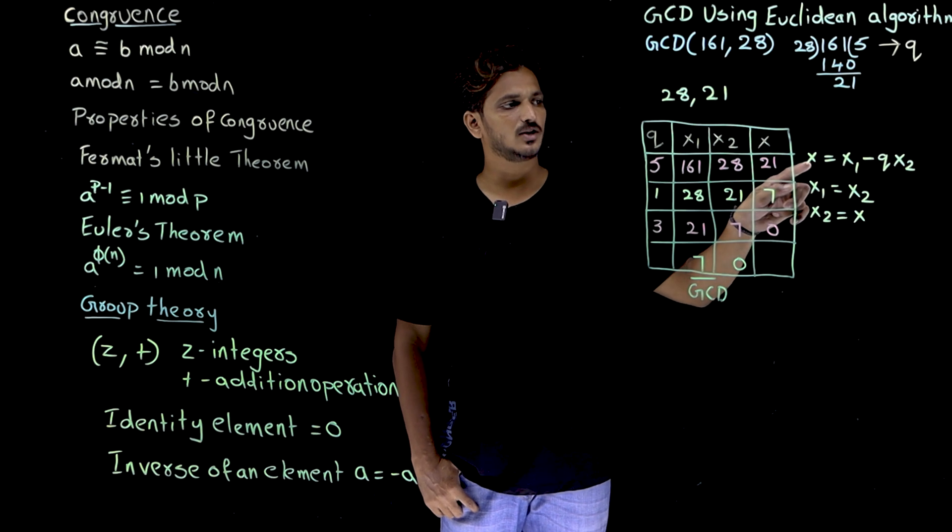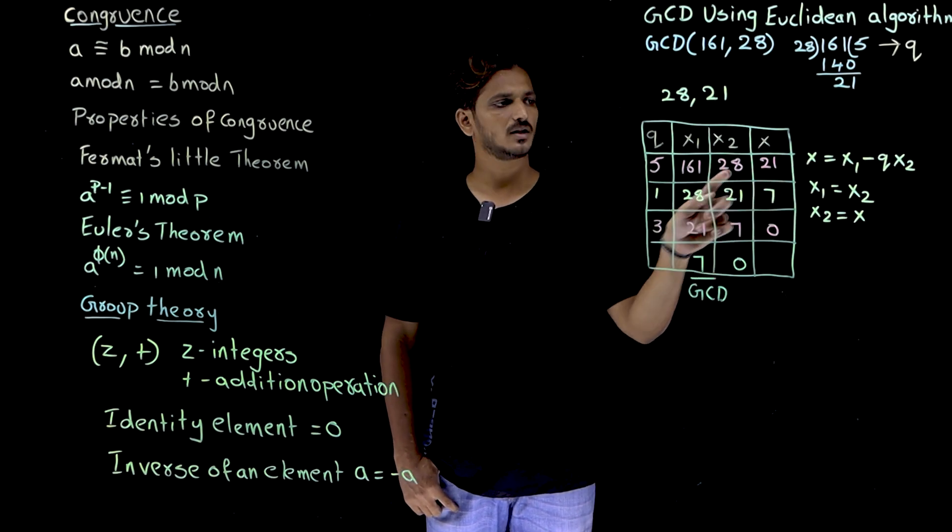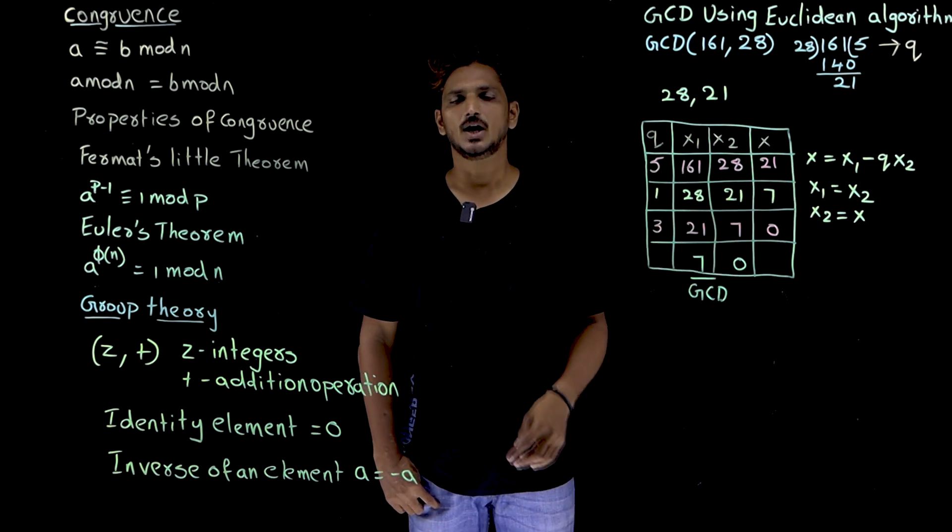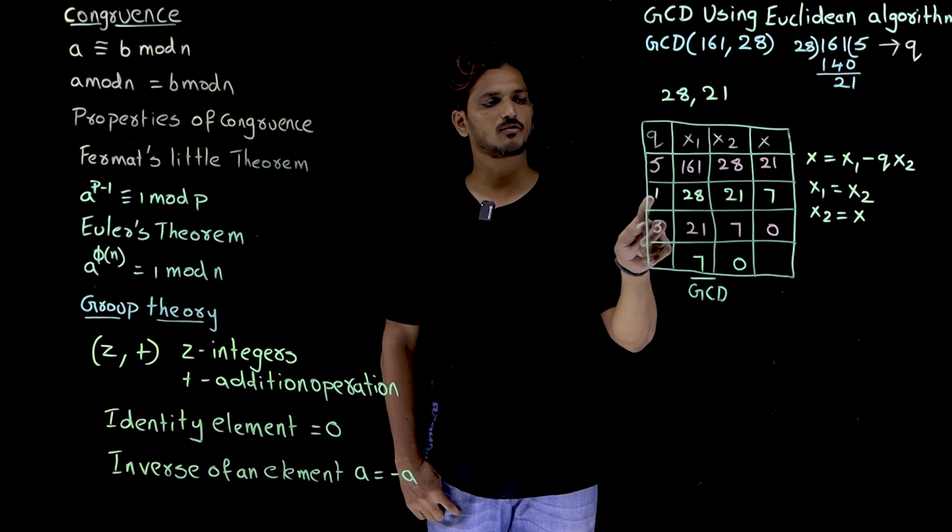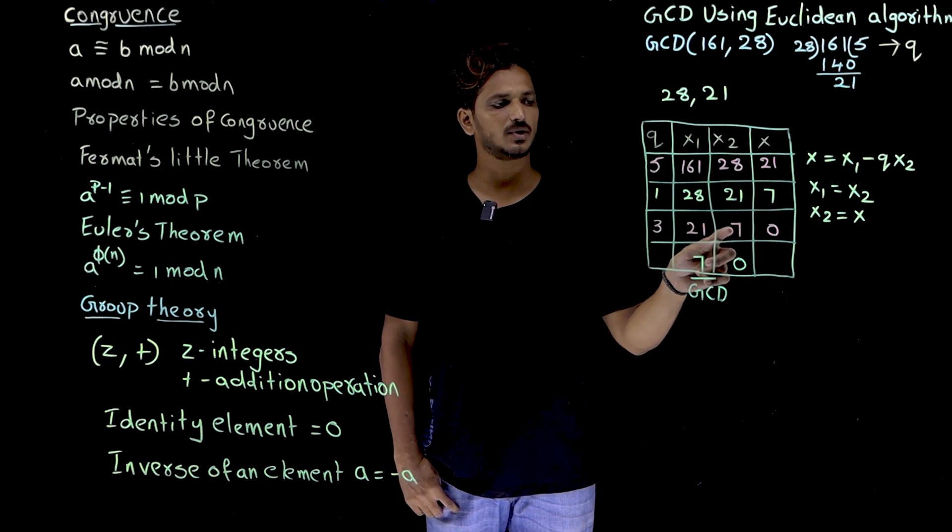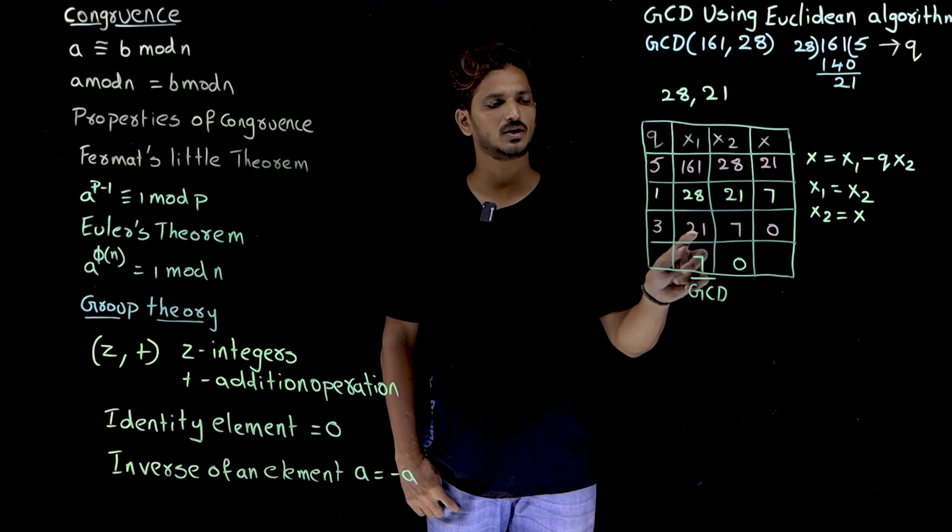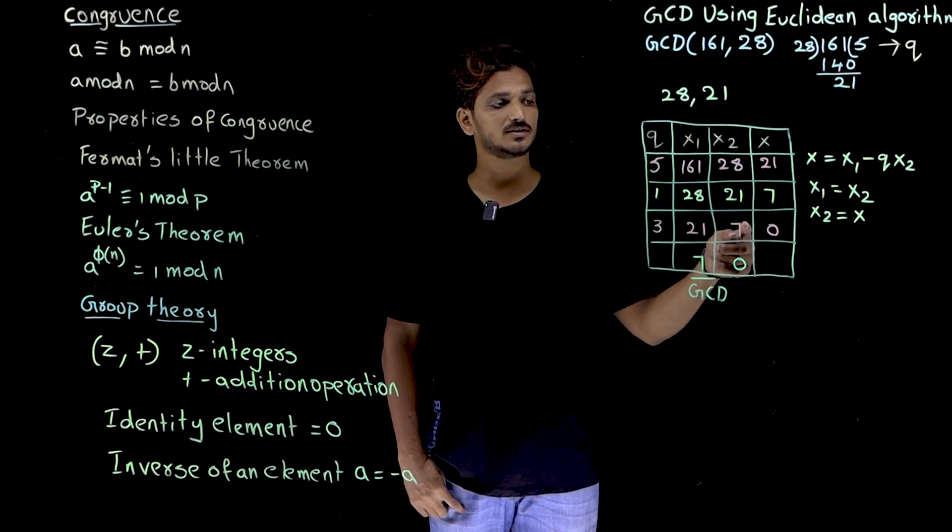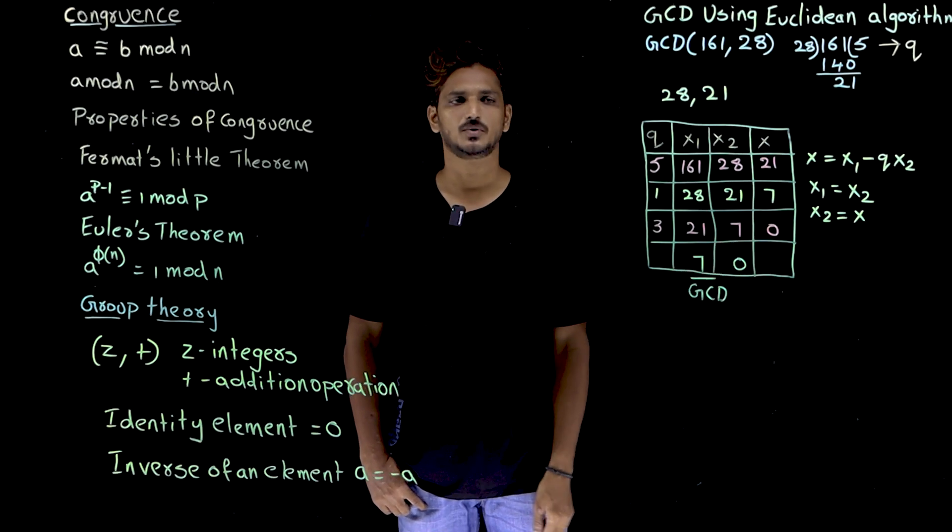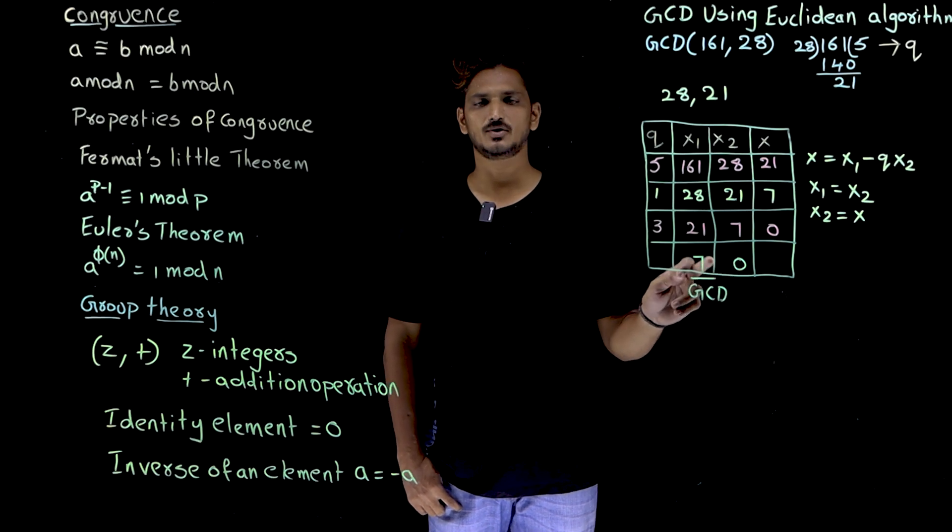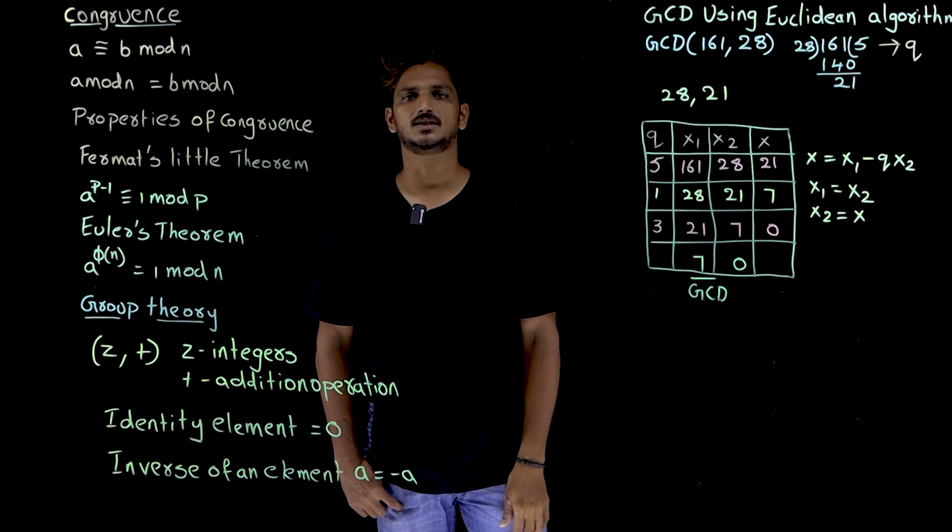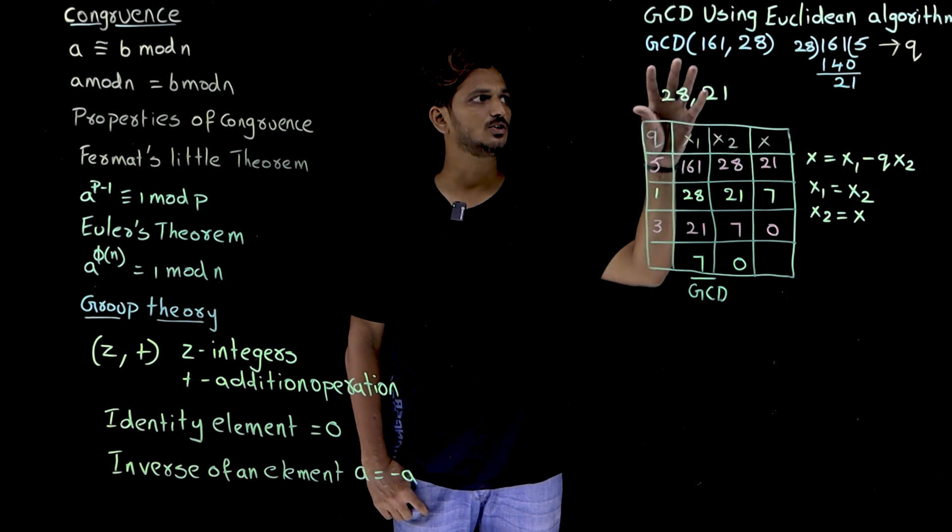Once you find the x value, remainder value, x2 will become x1, x will become x2. Again repeat, identify x is equal to x1 minus Q multiplied by x2. 21 once, 21, remainder is 7. Now x2 will become x1 and x will become x2. Again, 7 thrice, 21, remainder is 0. Until you get 0, x2 will become x1 and x will become x2. So whenever you are having 0, GCD value is 7. So GCD of 161 comma 28 is 7 is the GCD value. This is how we find the GCD value using Euclidean algorithm.